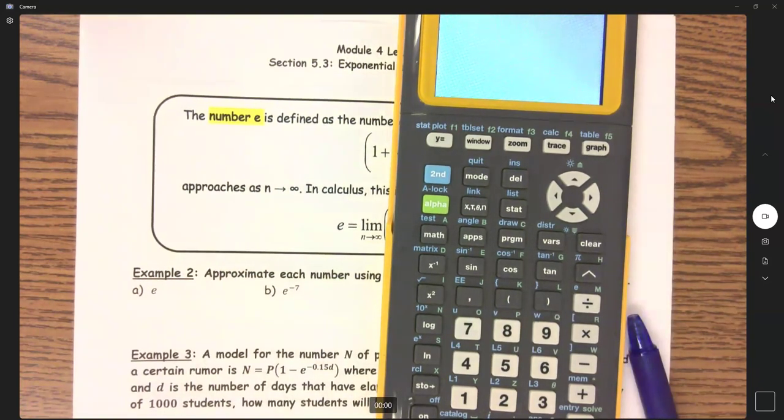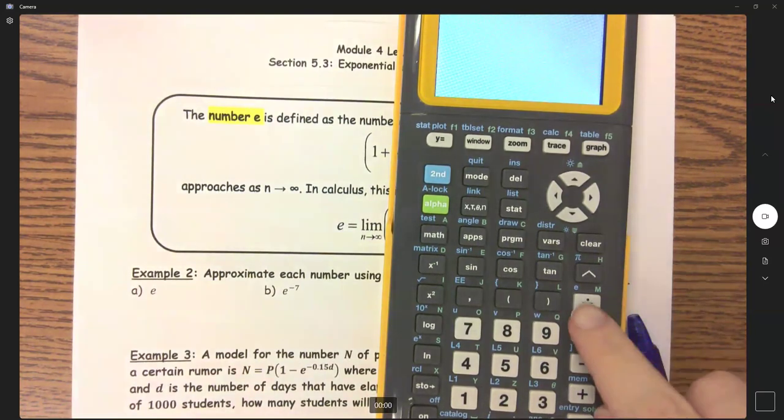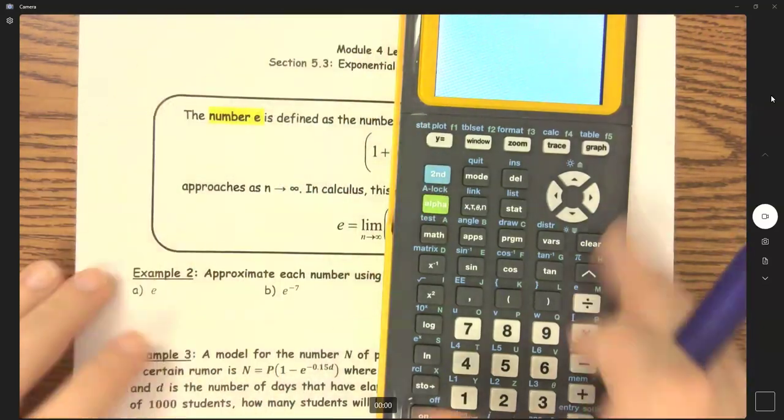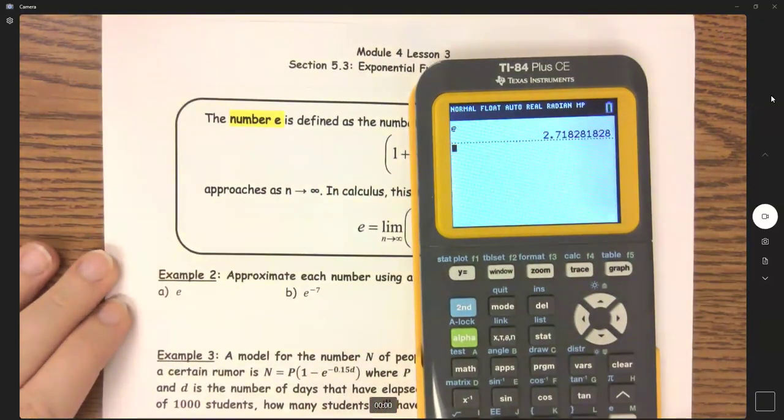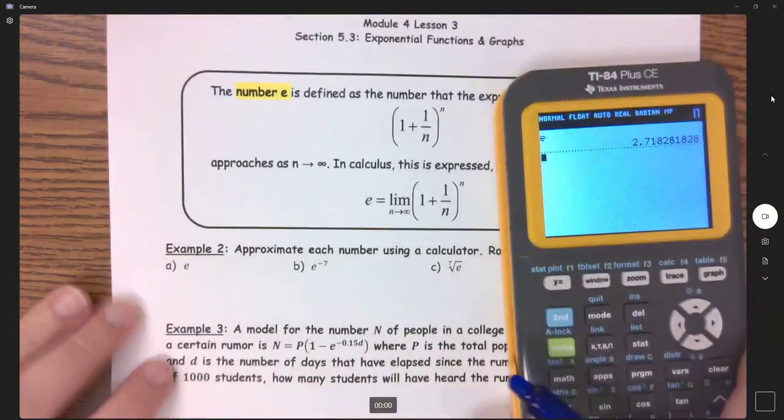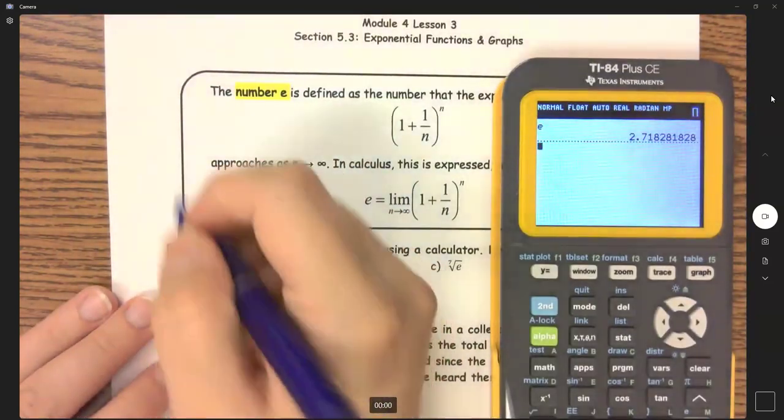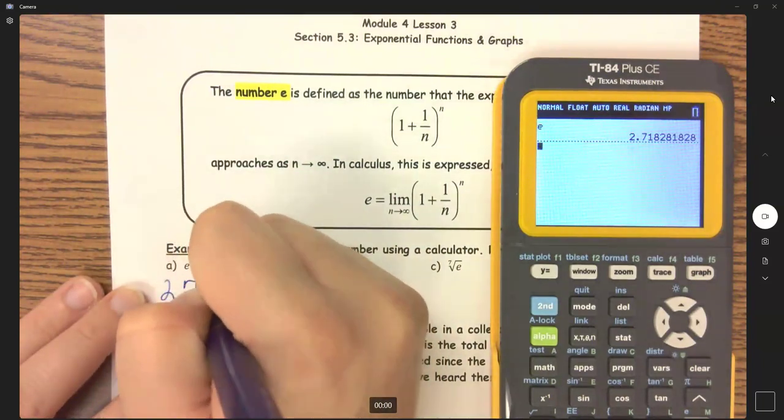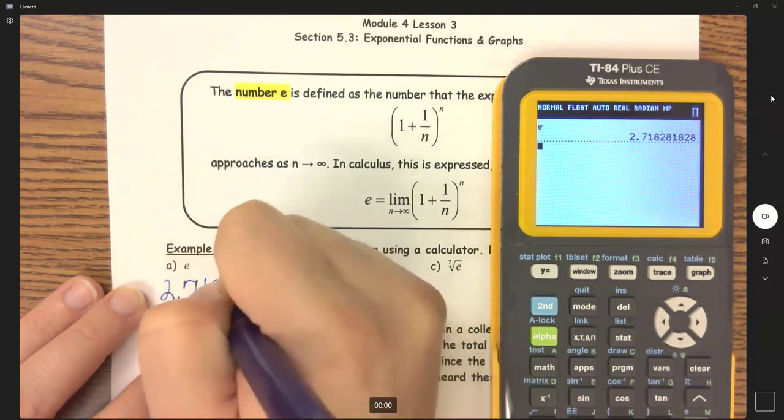Now, you could put an exponent of 1, and that's fine. But if you need just e, e is right here above that division sign. So I'm going to hit second divide for e, and we get that e is, and we want to round to four decimal places, e equals 2.7183.